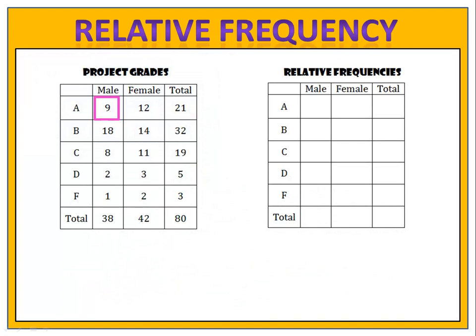In our next exercise, we have the frequency table from yesterday. We want to calculate the relative frequency for each entry. We'll begin with the males who got an A — nine out of 80 people. 9 divided by 80 is 0.1125, meaning 11.25% of the class. Females who got an A: 12 out of 80. 12 divided by 80 is 0.15, so 15% of the class were females who got an A. The total in that row is 21 out of 80, and 21 divided by 80 is 0.2625.